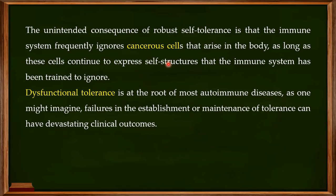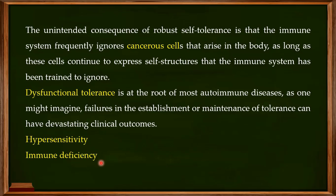This is what is called dysfunctional tolerance, and it is the root cause of most autoimmune diseases, such as rheumatoid arthritis. Failure in the establishment or maintenance of tolerance can have devastating clinical outcomes. If there is a problem with the immune system, you can have hypersensitivity or immune deficiency. All of these phenomena — autoimmune diseases, hypersensitivity, and immune deficiency — negatively affect the host. Simply put, tolerance differentiates between self and non-self, activates the immune system against non-self structures on pathogens, and avoids interacting with self-structures.